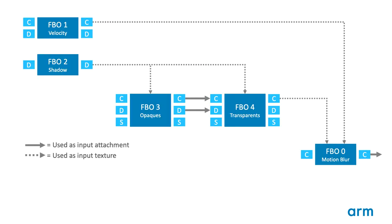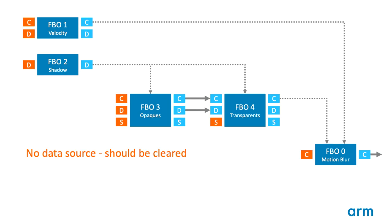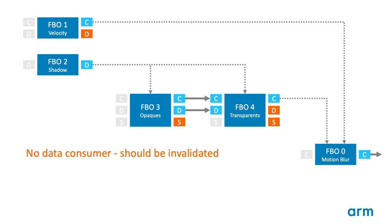Here we have a simple example of the frame graph, showing the data flow between five render passes. The main rendering part of the graph uses a shadow map, and then two passes for lighting — one for opaque objects and one for transparent objects laid on top. A motion blur is applied over the top, using a velocity map to blur the results of the main rendering in the final post-processing step. The highlighted attachments with no input should be cleared or invalidated as the first operation in the pass, avoiding unnecessary readbacks from DRAM at the start of each pass. The highlighted attachments with no downstream consumer should be invalidated as the last operation in the pass, avoiding unnecessary writes to DRAM at the end of each pass.